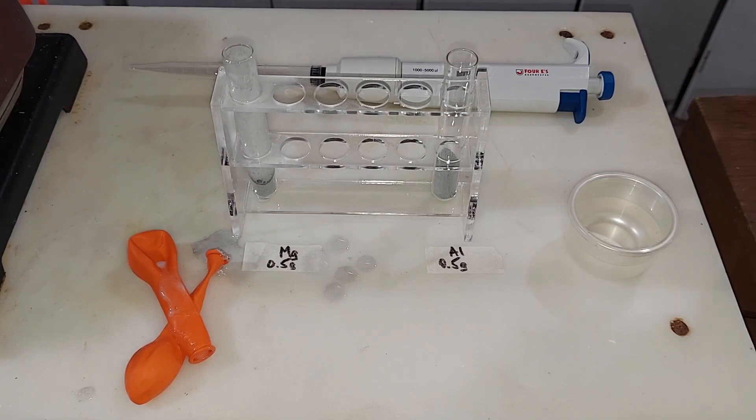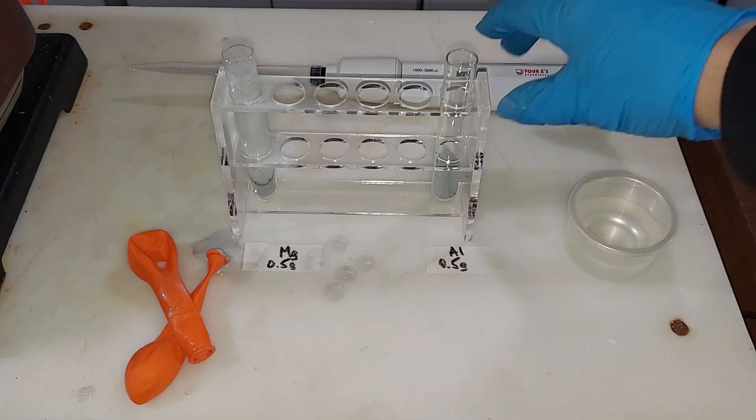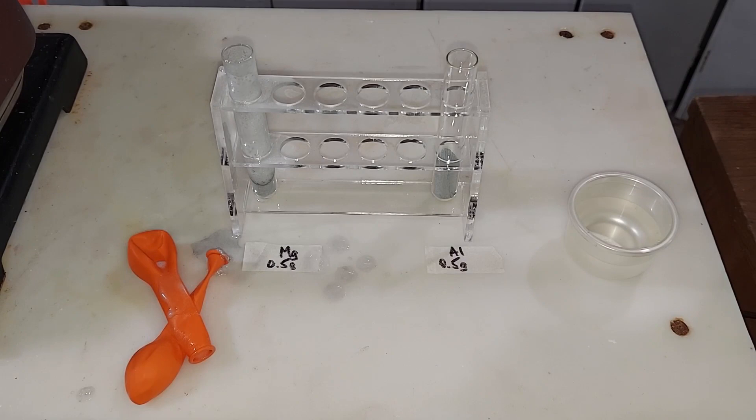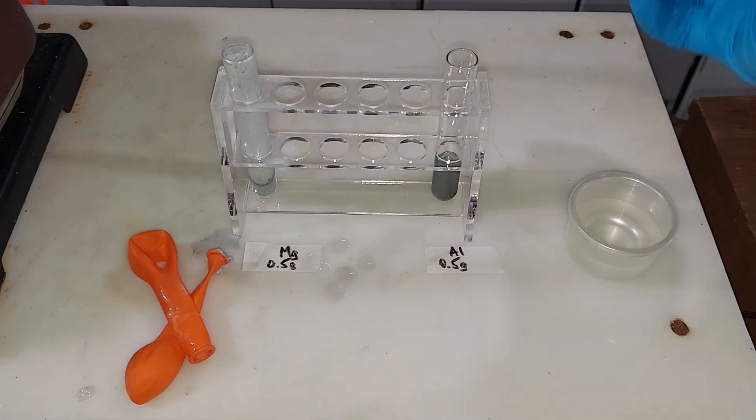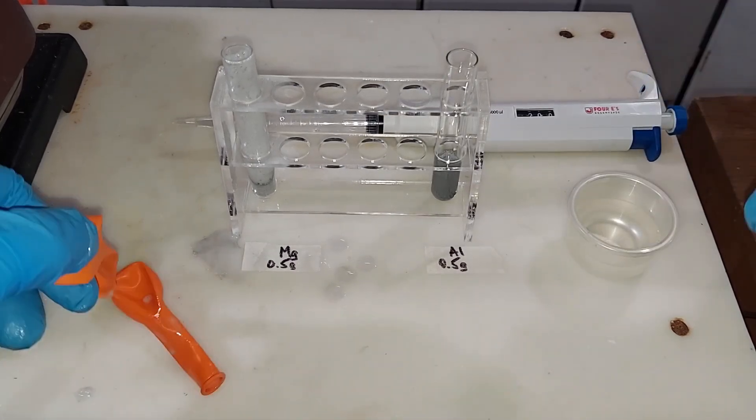All right, well let's do two cc's now with the aluminum and see if we get a similar reaction or not. If it's just as aggressive, we'll call this a tie. Two cc's going in... definitely slower acting.